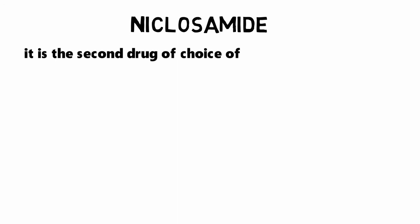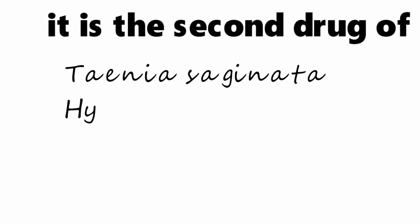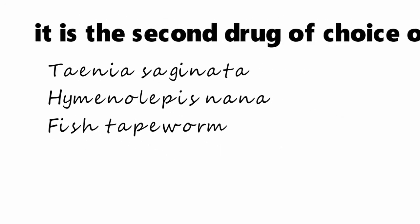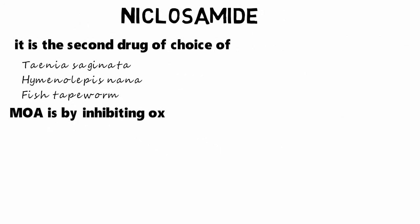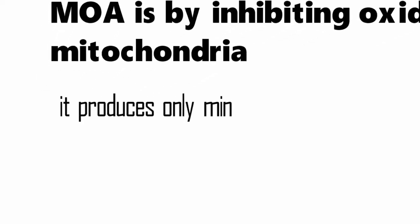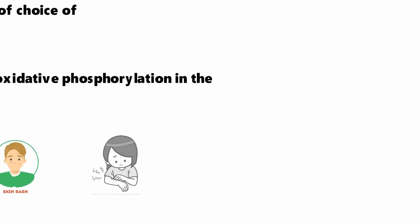The next important drug is niclosamide. It is a second drug of choice for infections caused by cestodes. The mechanism of action is by inhibiting oxidative phosphorylation in the mitochondria. It produces only minor side effects compared to other drugs — mainly nausea, vomiting, diarrhea, skin rashes, and itching as common side effects.